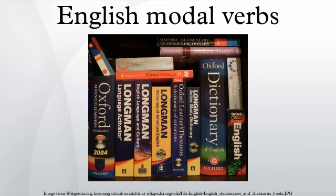'Have', used as an auxiliary in perfect aspect constructions, including the idiom 'have got'. It is also used in 'have to', which has modal meaning, but here 'have' only rarely follows auxiliary verb syntax. 'Do' — see do-support. For more general information about English verb inflection and auxiliary usage, see English verbs and English clause syntax. For details of the uses of the particular modals, see usage of specific verbs below.